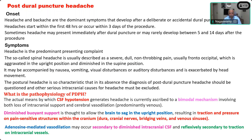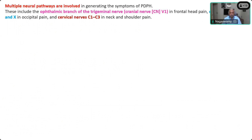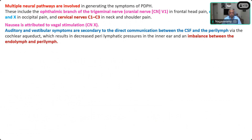Adenosine causes vasodilatation — this is the second pathophysiological mechanism of PDPH. Multiple neural pathways are involved. The ophthalmic branch of the trigeminal nerve causes frontal head pain. Cranial nerves 9 and 10 cause occipital pain. Cervical nerves C1 to C3 cause neck and shoulder pain. Nausea is attributed to vagal stimulation. Auditory and vestibular symptoms are secondary to direct communication between the CSF and the inner ear, resulting in an imbalance between endolymph and perilymph.